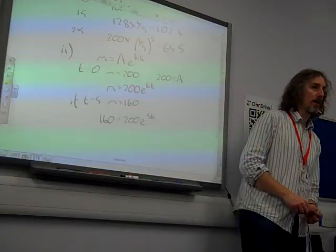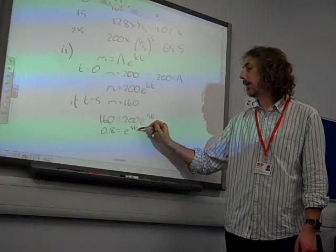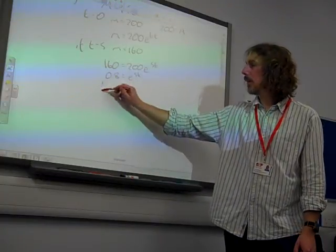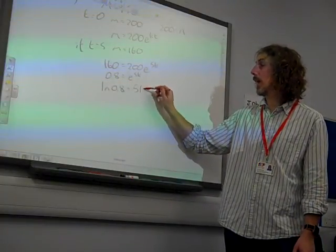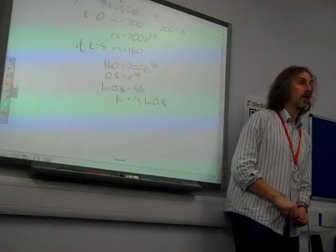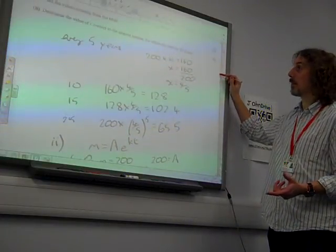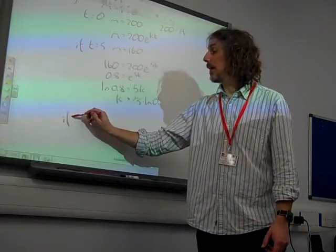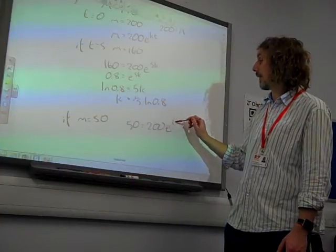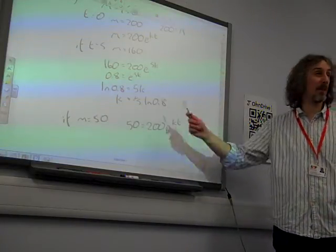We can rearrange that to find the value of k: 0.8 equals e to the 5k. So ln 0.8 equals 5k, and therefore k equals one-fifth times ln 0.8. We wanted to know when the mass is 50 grams. If m equals 50, that means 50 equals 200 e to the kt. We need to solve that equation for t. We know k is one-fifth of ln 0.8.